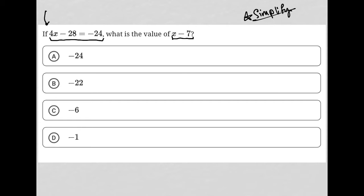There's a couple of ways to solve this. The most obvious, maybe immediate way, would be to take the equation that's been provided and to solve for x. So to solve for x, I'd add 28 to both sides here. I'd end up with 4x is equal to 4.